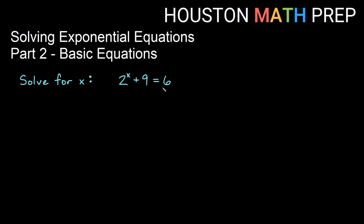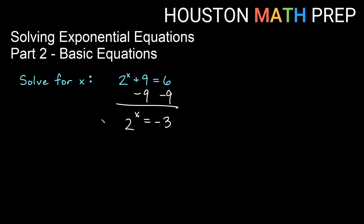Our last one is the oddball problem, saved for the end: 2 to the x plus 9 equals 6. The plus 9 is not part of the exponential term, so subtract 9 from both sides, giving 2 to the x equals negative 3. What's being done to x is exponential base 2, so we apply the inverse operation log base 2 to both sides. Log base 2 gets rid of exponential base 2, leaving x equals log base 2 of negative 3.